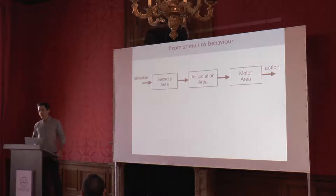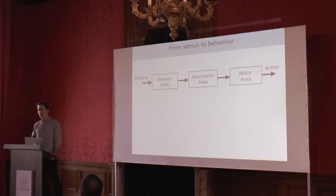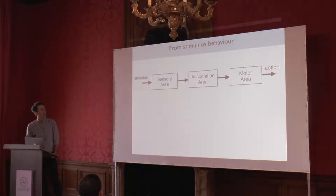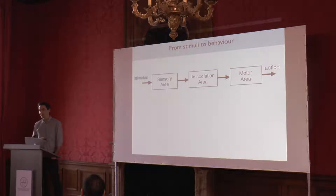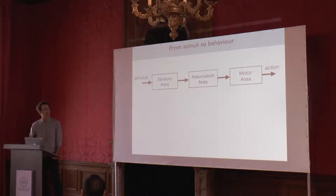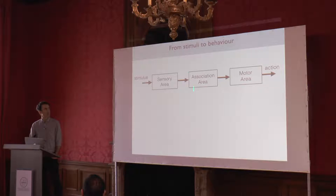The big question we're all interested in is how does the brain transform incoming stimuli into actions? We have a nice textbook cartoon for this. The stimuli arrive first in sensory areas, which are believed to represent the essential sensory features in the best possible way, and then relay them to higher areas, which progressively transform stimuli into actions — stimuli into decision, and then eventually into action.